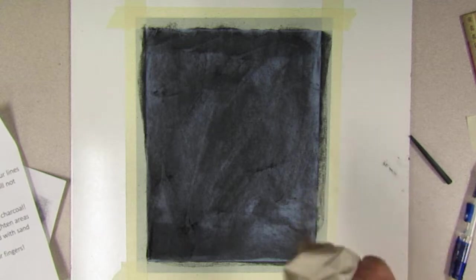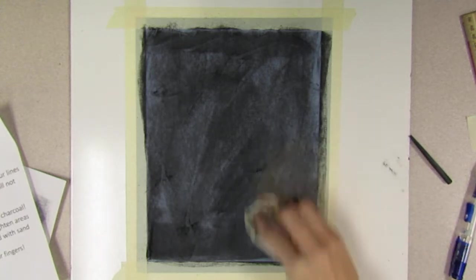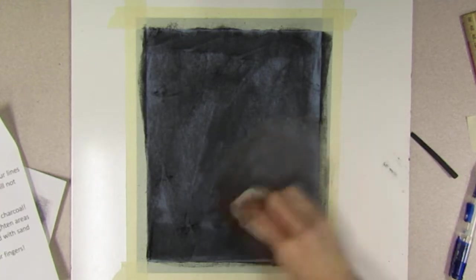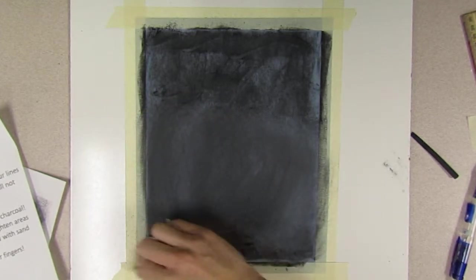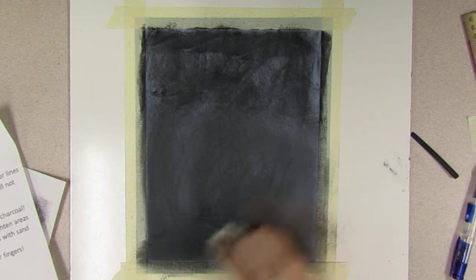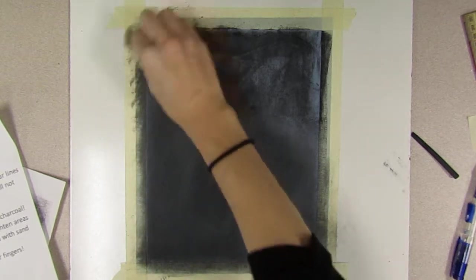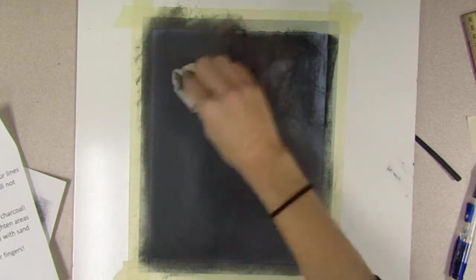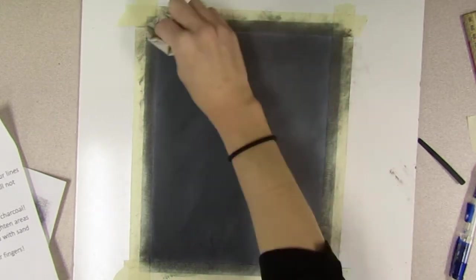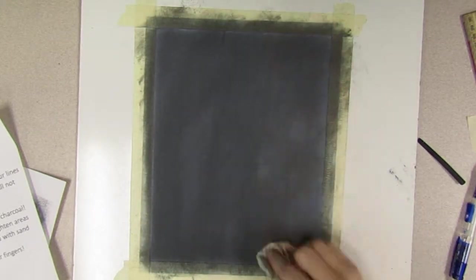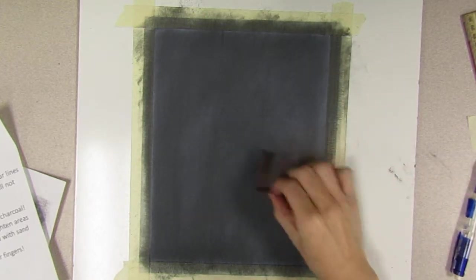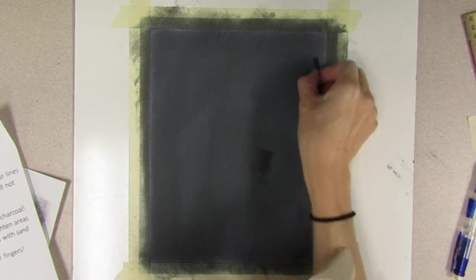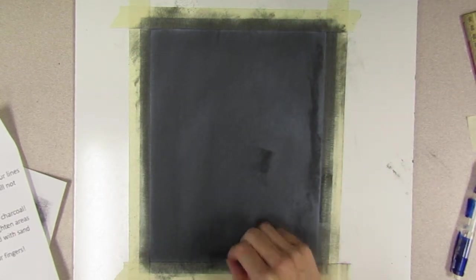So I'm going to take my paper towel and I'm going to rub it into the surface, trying to even it out. I don't need this really dark. Again, this is a medium value. Now, I have some areas that are still pretty light, so I'm just going to add a little bit of charcoal along the edges and then tone that again.